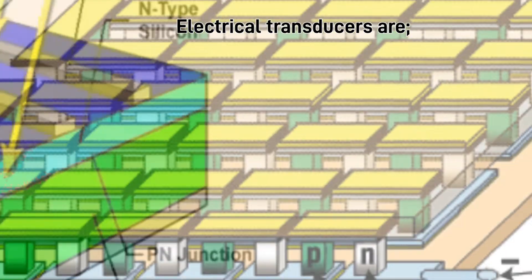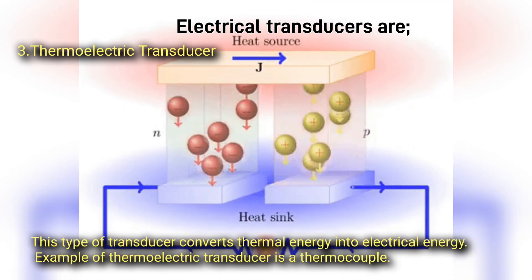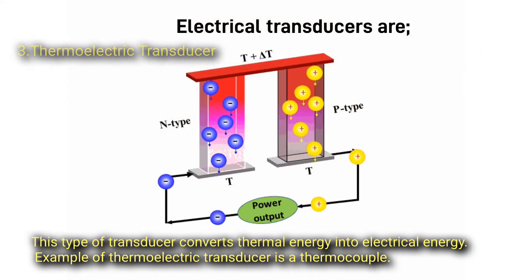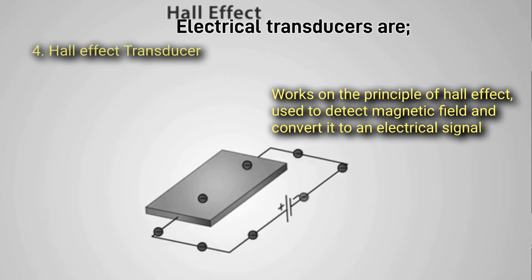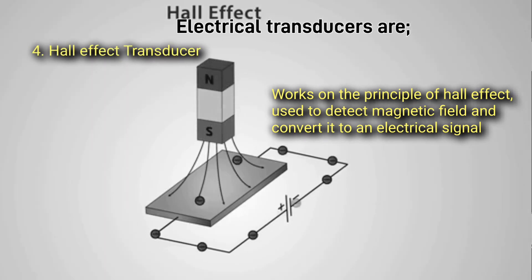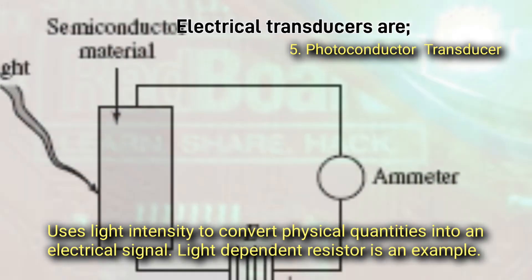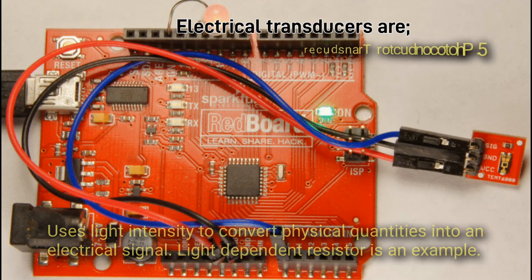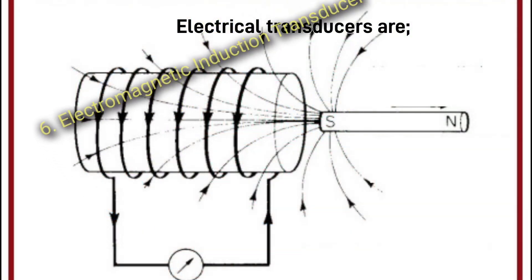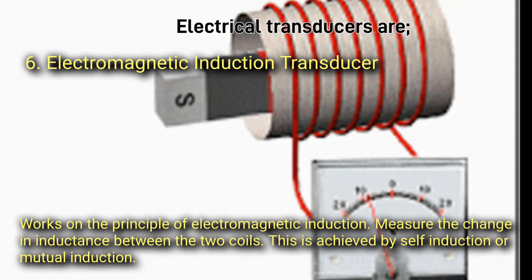Three, thermoelectric transducers — convert thermal energy into electrical energy; an example is the thermocouple. Four, hall effect transducers — work on the principle of the Hall effect, used to detect magnetic fields and convert them to an electrical signal. Five, photoconductor transducers — use light intensity to convert physical quantities into an electrical signal; an example is the light dependent resistor (LDR).